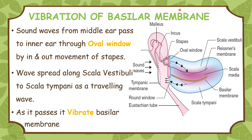Most of the sound energy is transferred directly from the scala vestibuli to the scala tympani. Very little sound wave ever reaches the helicotrema at the apex of the cochlea. As the sound energy passes from the scala vestibuli to the scala tympani, it causes the basilar membrane to vibrate. It is important to note that the part of the cochlea where the height of the pressure wave reaches its maximum varies with the frequency of the sound — this will be discussed in the traveling wave theory of von Békésy.